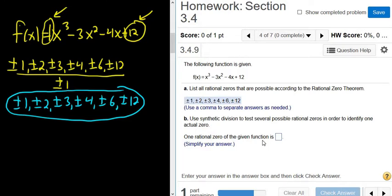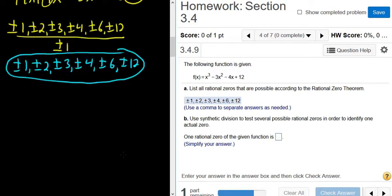Use synthetic division to test several possible rational zeros in order to identify one actual zero. Okay. So what this means is that you have to check each of these with synthetic division. So we'll start by checking 1. Usually you start by checking 1 and negative 1. So how do you check it? Well, you write down the 1 here.